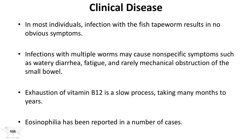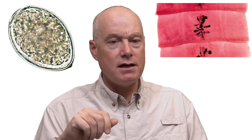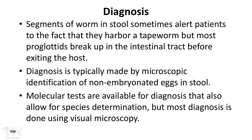Let's talk about clinical disease. In most individuals, infection with the fish tapeworm results in no obvious symptoms. However, infections with multiple worms may cause nonspecific symptoms such as watery diarrhea, fatigue, and rarely — with a really high worm burden — mechanical obstruction of the small bowel. The classic association with fish tapeworm infection is exhaustion of vitamin B12, a slow process that takes many years. In some cases you'll also see eosinophilia. Segments of the worm in stool sometimes alert the patient, but usually the proglottids break up in the intestinal tract, so the patient often won't see them unless there's a significant burden.